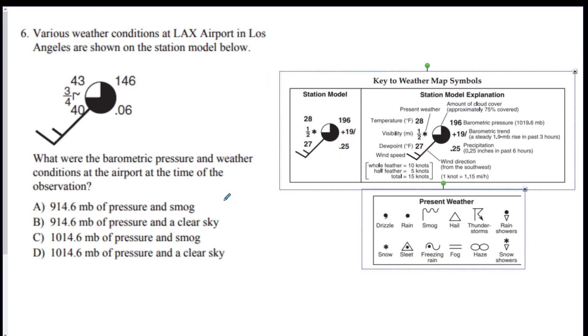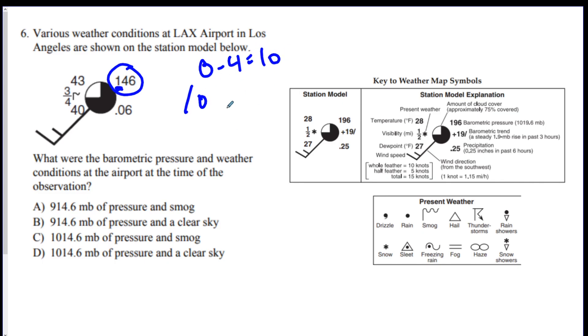Number six. We've got a station model. What were the pressure and weather conditions at the airport at the time of the observation? So here's your pressure. Let's figure that out. There's a one. So remember zero to four, you put a ten in the front. So this is ten one four six. And then put a dot in between. So pressure is one thousand fourteen point six. So we can get rid of A and B. And then they want clear sky or smog. Here this symbol here, that's smog. So C looks like it's the best answer.